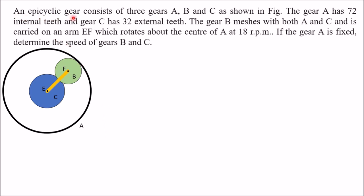The first problem: an epicyclic gear consists of three gears A, B, and C as shown in the figure. Gear A has 72 internal teeth. Gear C has 32 external teeth. Gear B meshes with both A and C and is carried on an arm EF, which rotates about the center of A at 18 RPM. Gear A is fixed, so speed of A is 0.